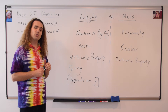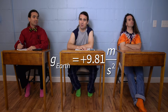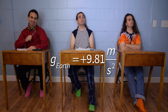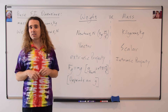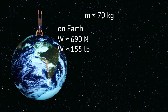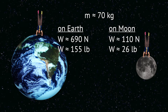And Bobby, what is the accepted value for the acceleration due to gravity here on planet Earth? Positive 9.81 meters per second squared, and I'm absolutely positive that it's a positive number. Because I have a mass of roughly 70 kilograms, I have a weight on Earth of about 690 Newtons, or about 155 pounds. If I were standing on the moon, my mass would still be 70 kilograms. However, my weight would be about 110 Newtons, or about 26 pounds.